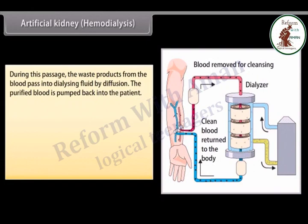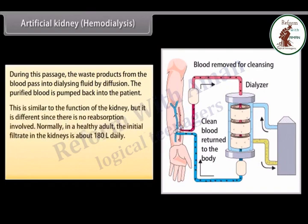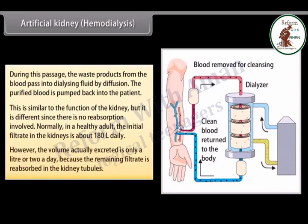The purified blood is then pumped back into the patient. This is similar to the function of the kidney, but different since there is no reabsorption involved. Normally, in a healthy adult, the initial filtrate in the kidneys is about 180 liters daily; however, the volume actually excreted is only one to two liters a day, because the remaining filtrate is reabsorbed in the kidney tubules.